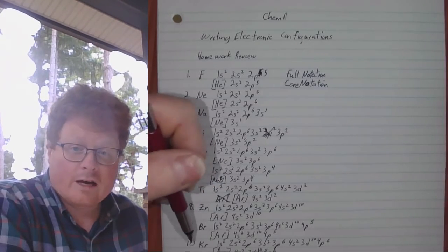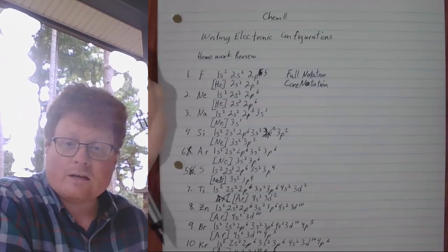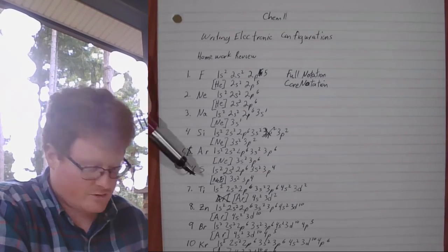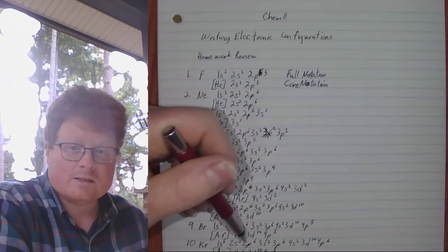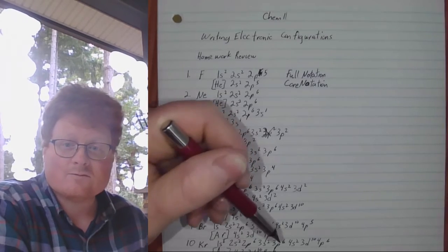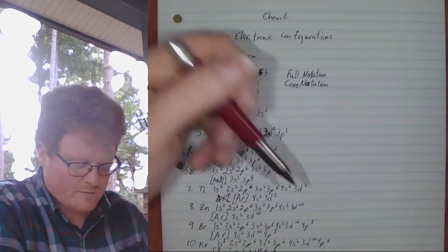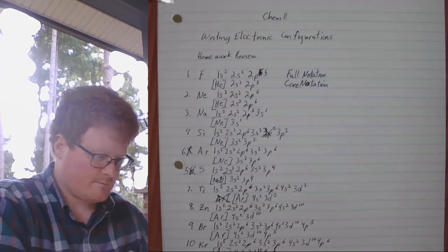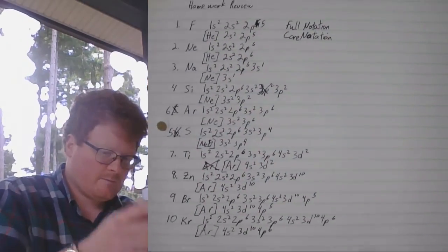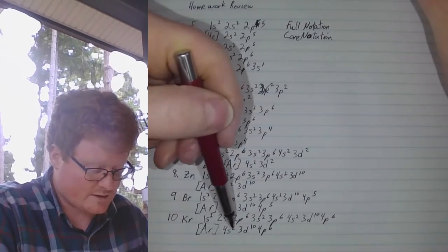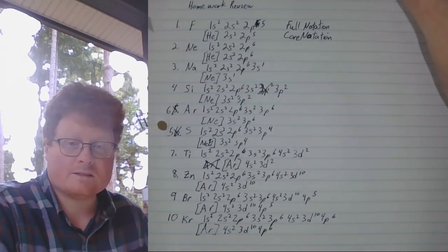Krypton, and halogen. So that means you're going to fill every shell that it has available with an electron. Argon 1S2, 2S2, 2P6, 3S2, 3P6, 4S2, 3D10, 4P6. And its core notation will be Argon 4S2, 3D10, 4P6.